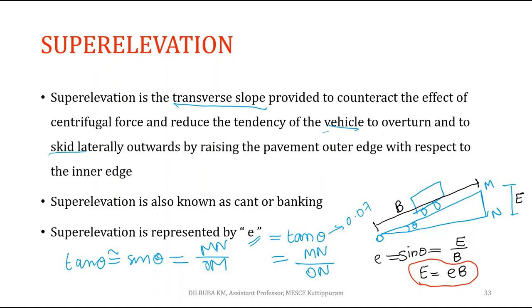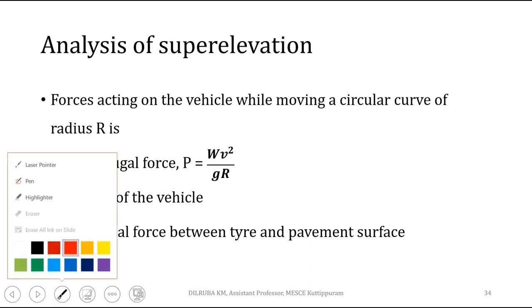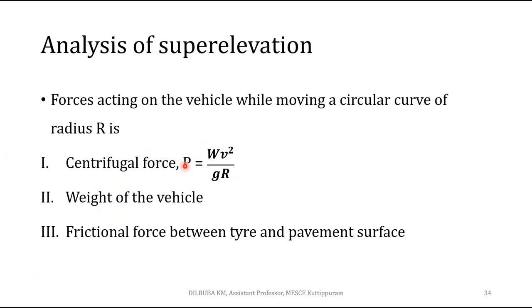The rise of the outer edge with respect to the inner edge equals super elevation multiplied by the width of the road. Now let us analyze the forces acting on a vehicle moving through a circular curve with super elevation. The three forces are: centrifugal force P = WV²/gR, weight of the vehicle W, and frictional force between the tire and the pavement surface.